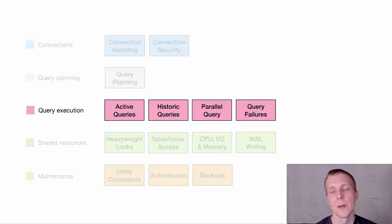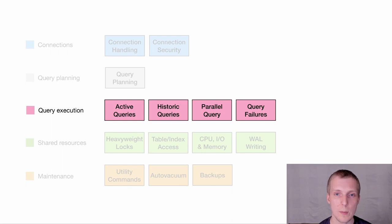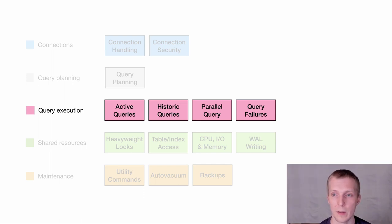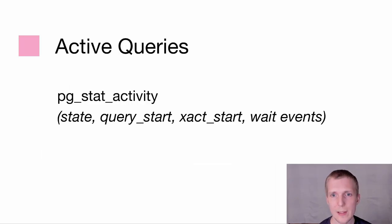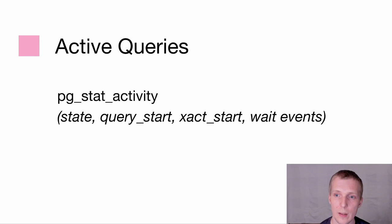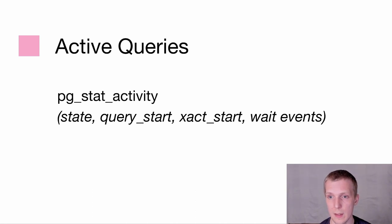Now a bigger section: query execution. I've spent a lot of time on query execution — this is really where we focus with PG Analyze, around query performance tuning. Looking at active queries, we come back to pg_stat_activity. It's such a simple view but gives us a lot of data: queries currently running, when they started running, and wait events that are active.